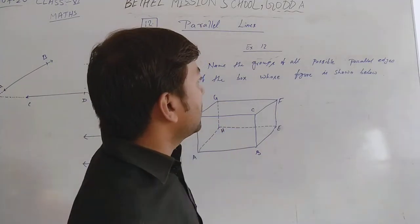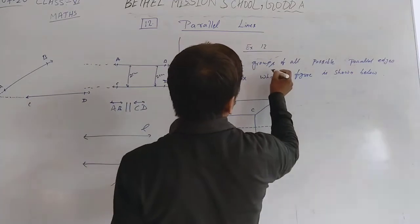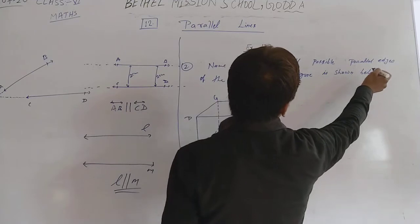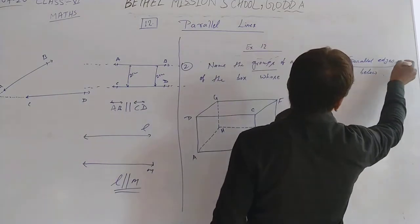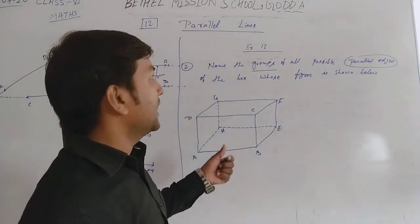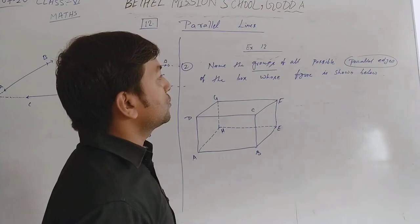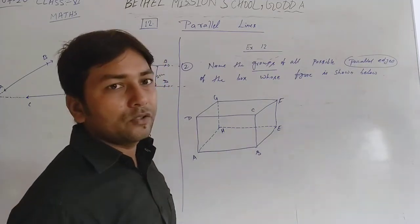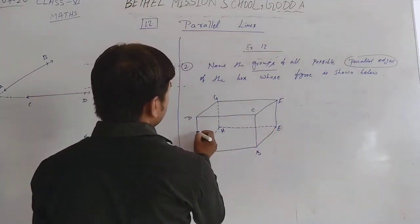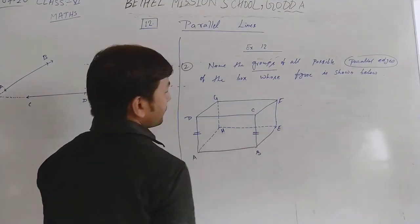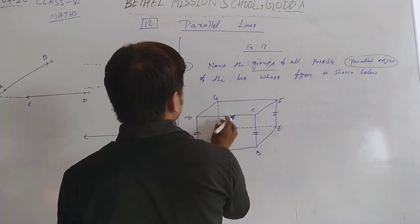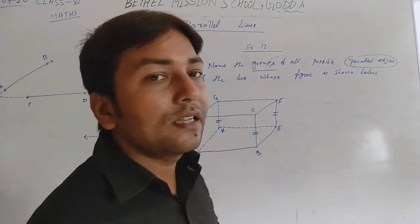Here in the given figure, you have to write the names of all possible groups of parallel lines. You can find that this line is parallel to this one, this is parallel to this, and this is parallel to this — meaning four lines are parallel.